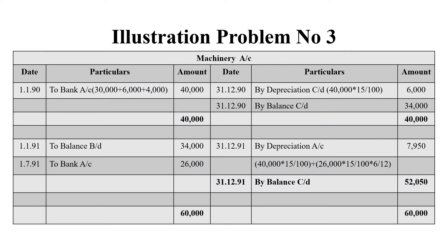Now, year-wise machinery account: we purchased a second-hand machinery for 40,000 rupees. On 31st December 1990, depreciation on the credit side is 40,000 into 15 by 100 equals 6,000 rupees. The credit balance is 34,000 rupees and grand total on both sides is 40,000. Next year, we bring down 34,000 to the debit side, and one more machinery bought on 1st July 1991 costs 26,000. Depreciation for the first machine is 40,000 into 15 by 100, and for the machine bought on 1st July 1991, six months: 26,000 into 15 by 100 into 6 by 12, giving total depreciation of Rs. 7,950.